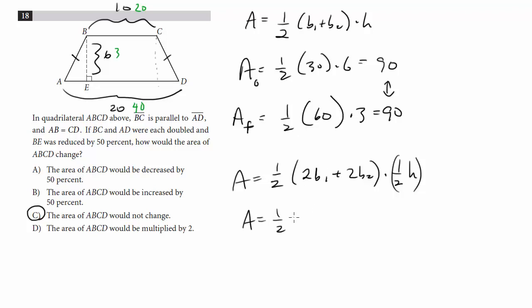Notice next, if I factor a 2 out of the B1 plus B2, this times 2 and this one-half cancel. So what we're left with is one-half base 1 plus base 2 times height, which is the exact place we started.